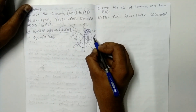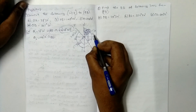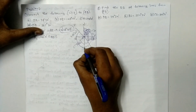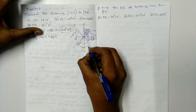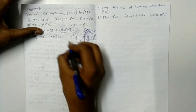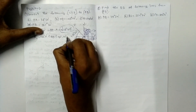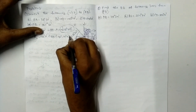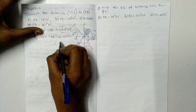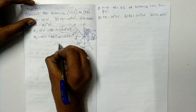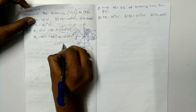Since 142 degrees is greater than 90, it goes below the east line toward south. We calculate: 180 degrees minus 142 degrees equals 37 degrees 45 minutes east. So the quadrantal bearing of OB is South 37°45' East.